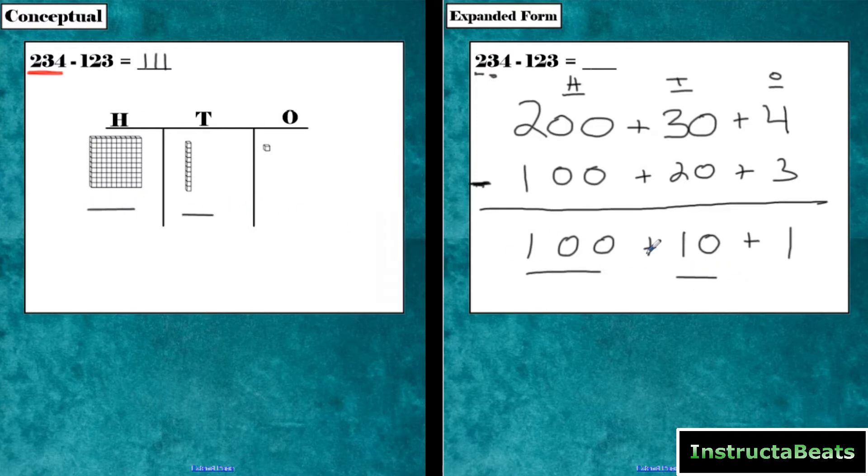So you can see right here, this matches perfectly my base 10 blocks. The only difference is I'm not showing it with the base 10 blocks. I'm showing it with the values of numbers. So just like I did over here, I have to combine those back. That's what the plus signs are for. So if I do that, I have a 1 in the 100s place, a 1 in the 10s place, and a 1 in the 1s place. And the difference between 234 and 123 is 111. Very similar to what you do in the base 10 blocks, except now we're just writing it with actual numbers.